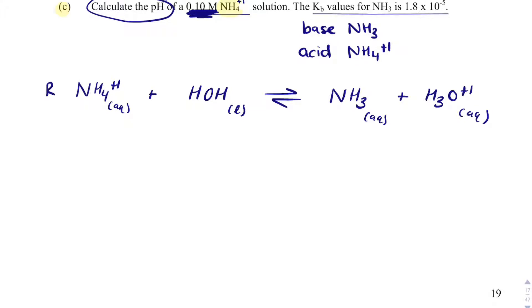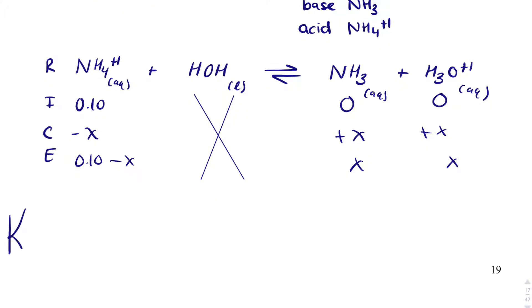And I can do a rice table. This is 0.10. Water, of course, is just an X. 0, 0, minus X, plus X, plus X, 0.10, minus X, X, and X. And then I'm going to write my K expression. K is equal to H3O plus 1 times NH3, both to the first power, divided by NH4 plus 1.